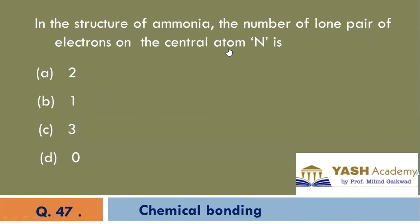In the structure of ammonia, the number of lone pair of electrons on the central atom N is. The correct option is B, that is 1.